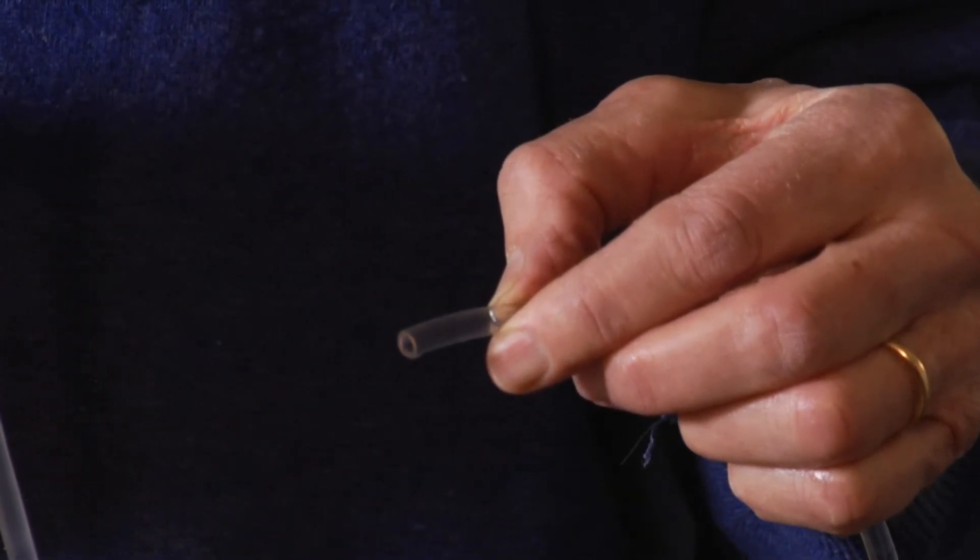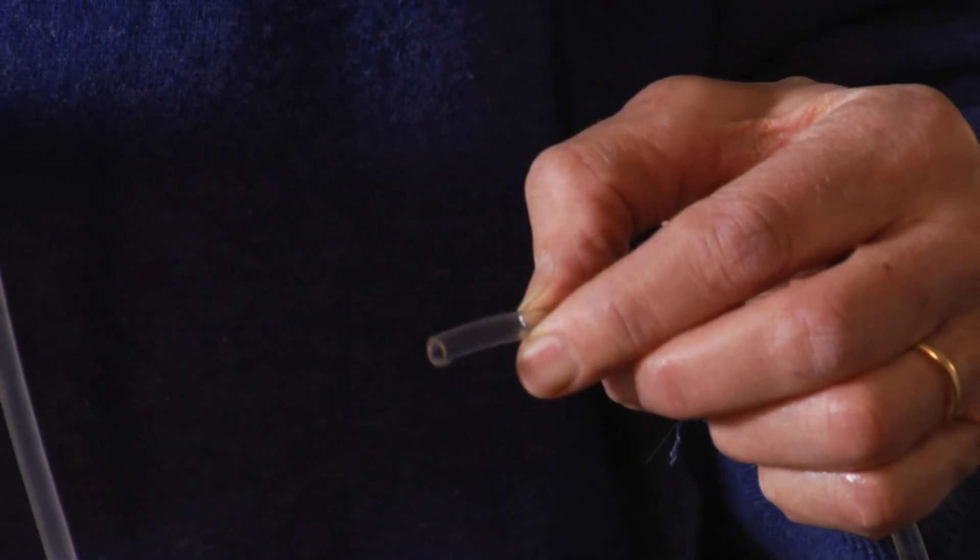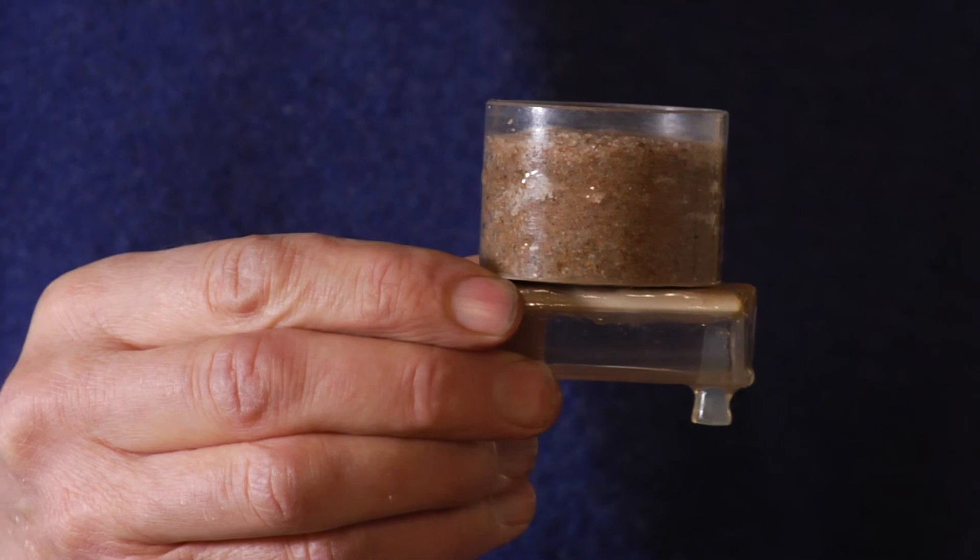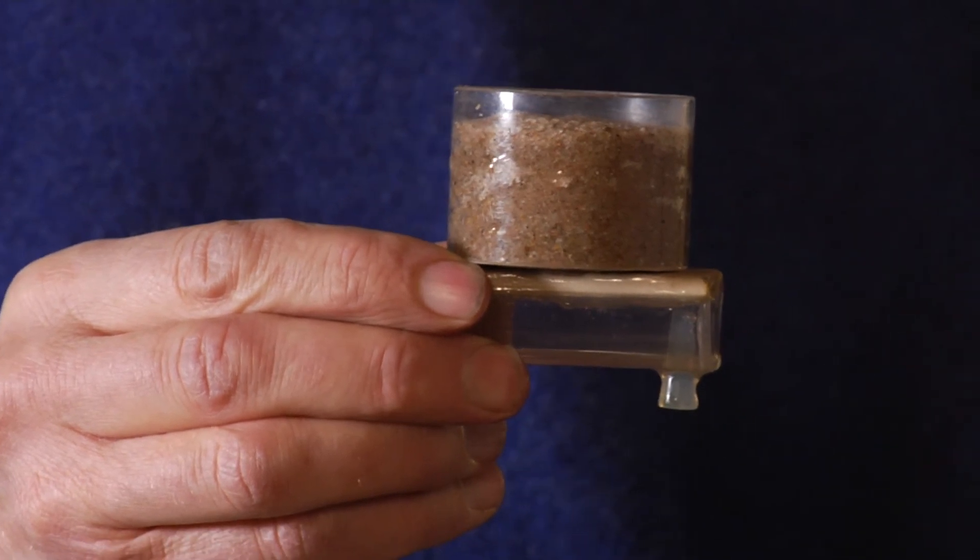The pores in the sand are much larger than the pores in the plate, and they are emptied by a smaller suction. You can also see how the sample gradually becomes lighter as water is replaced by air.